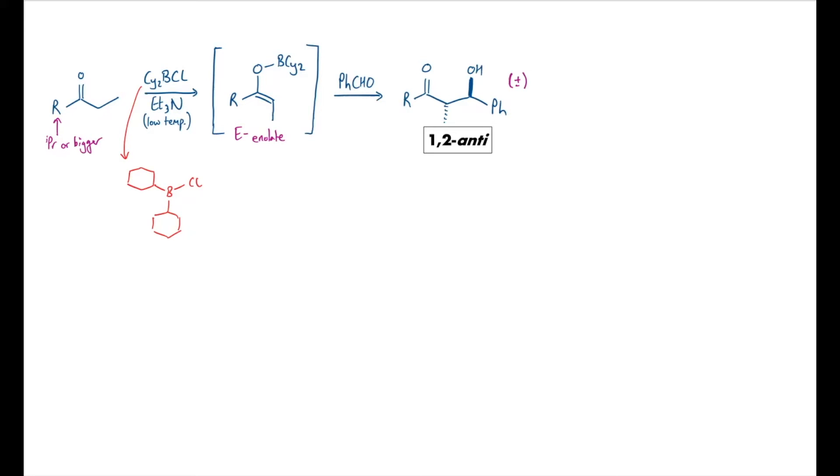So the first step of the mechanism is going to be coordination of this boron center to the lone pairs on the ketone. Now when we do this, if you have an sp2 oxygen, we're going to prefer to want to keep the big bulky boron thing on the opposite side to the R group. So initially in equilibrium, we're going to form this activated complex.